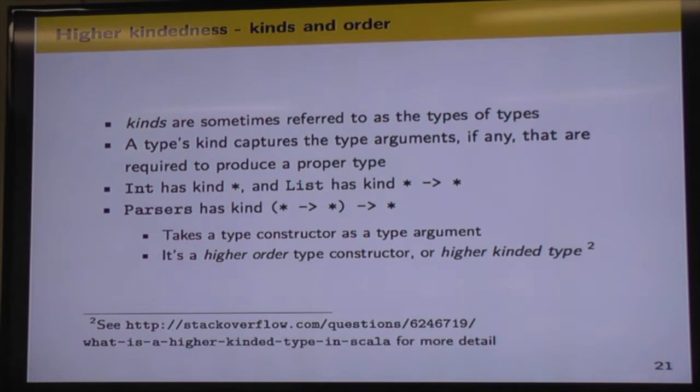And now we can talk about kinds. So kinds are sometimes referred to as the types of types. The kind captures the type arguments, if any, that are required to produce a proper type. So this might be a little clearer looking at the example. So int has kind star. So it is already a proper type. List has kind star to star. So it's, as we said before, it's a type constructor which works kind of like a function. It takes a proper type as a type argument and then produces a proper type that we can use to classify our values.